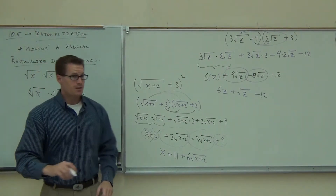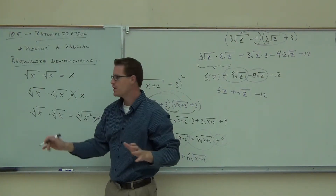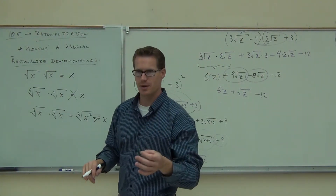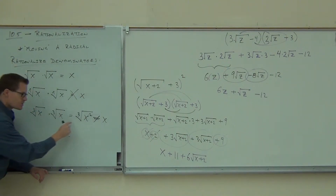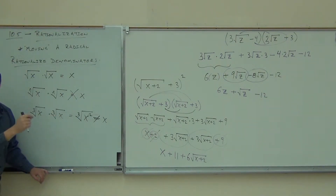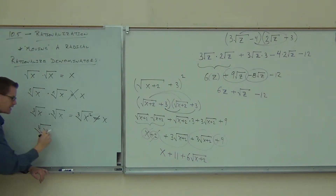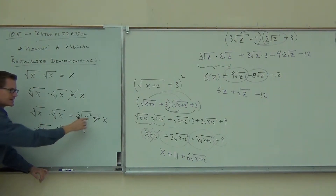So you agree this works if you have a square root — no problem. But for cube roots, fourth roots, fifth roots, we have a problem. The question is: is there something else you could multiply by that would eliminate the root? I know multiplying by the same cube root didn't work, but let's say I still have that cube root of x and I need to multiply by something. I'll give you that it has to be a cube root — that's the only way you can combine those roots. Is there something I could multiply by to get something that will simplify?